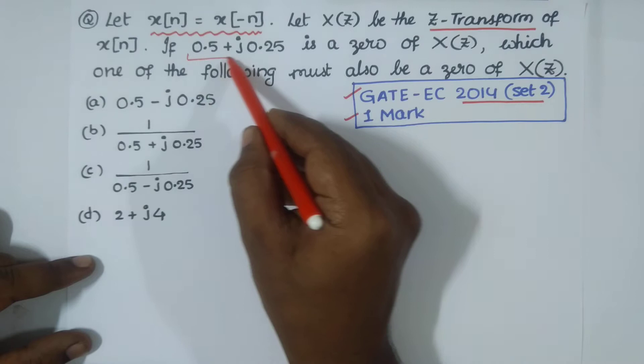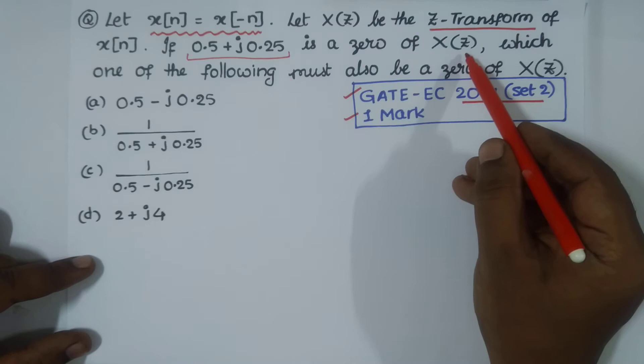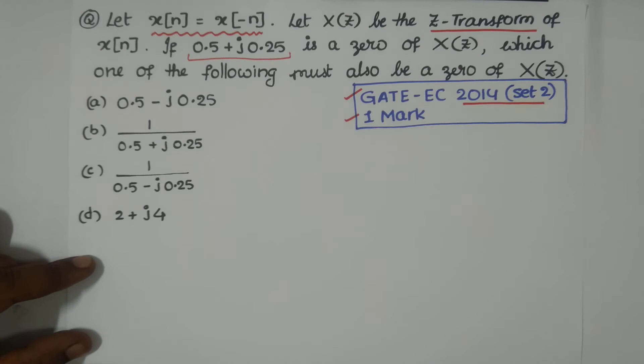Now you have a complex zero: if 0.5 + j0.25 is a zero of X(Z), which one of the following must also be a zero of X(Z)?